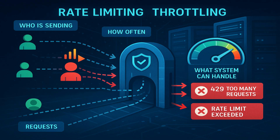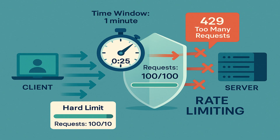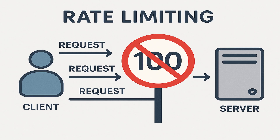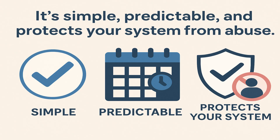Rate limiting and throttling are related but not exactly the same. Rate limiting is about putting a hard limit on the number of requests a client can make in a given time window. For example, you allow a user to make 100 requests per minute. If they go above that, the system immediately starts rejecting further requests, usually with an HTTP 429 — too many requests error. It's like saying: you are allowed 100 requests per minute, no more. If you cross that, you are blocked until the next minute starts.